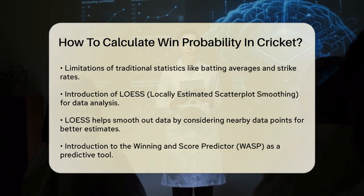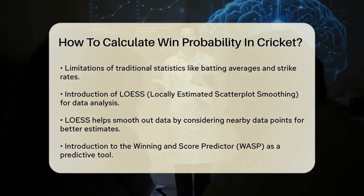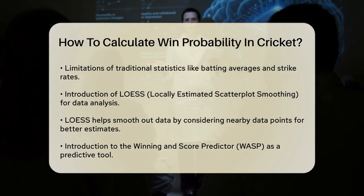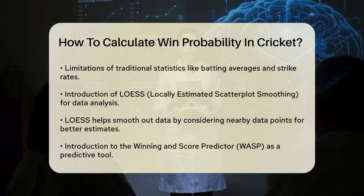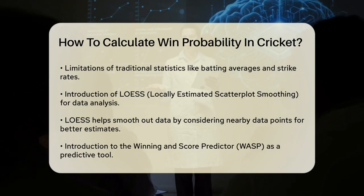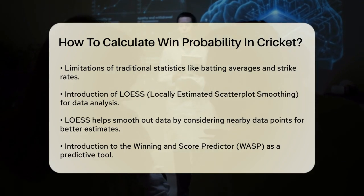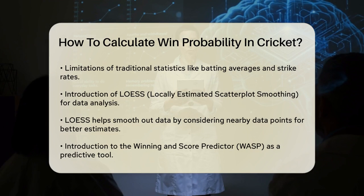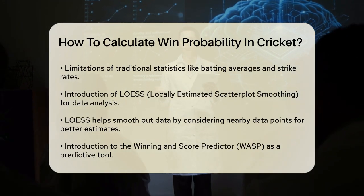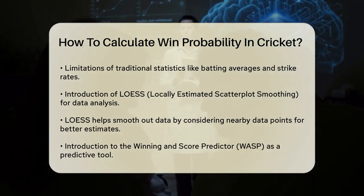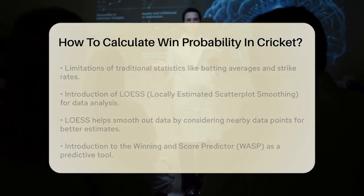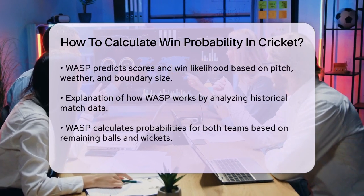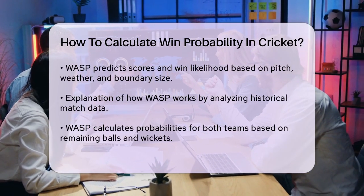The Winning and Score Predictor, WASP, is another powerful tool used in cricket. WASP predicts scores and the likelihood of a team winning based on factors like the pitch, weather, and boundary size. It uses data from past matches to estimate the probability of runs and wickets in each game situation. This model works backwards from the end of the innings to calculate the total runs or the probability of winning at any point in the game.